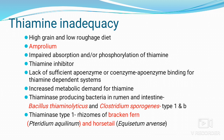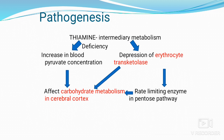Regarding pathogenesis: thiamine has many important functions. It helps body cells convert carbohydrates into energy, plays an important role in pyruvate metabolism, and aids conduction of nerve signals. Deficiency of thiamine results in increased blood pyruvate concentrations and depression of erythrocyte transketolase — a rate-limiting enzyme in the pentose phosphate pathway. The brains of young animals are mainly dependent on the pentose phosphate pathway for energy. Thiamine deficiency adversely affects carbohydrate metabolism in the cerebral cortex, leading to cerebral edema mainly due to reduction in ATP production.